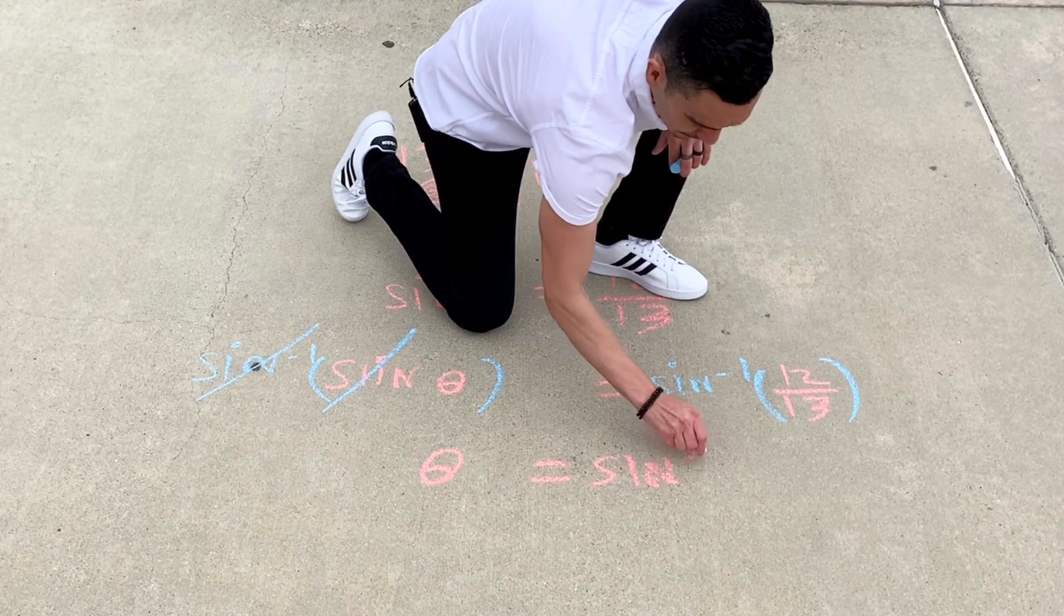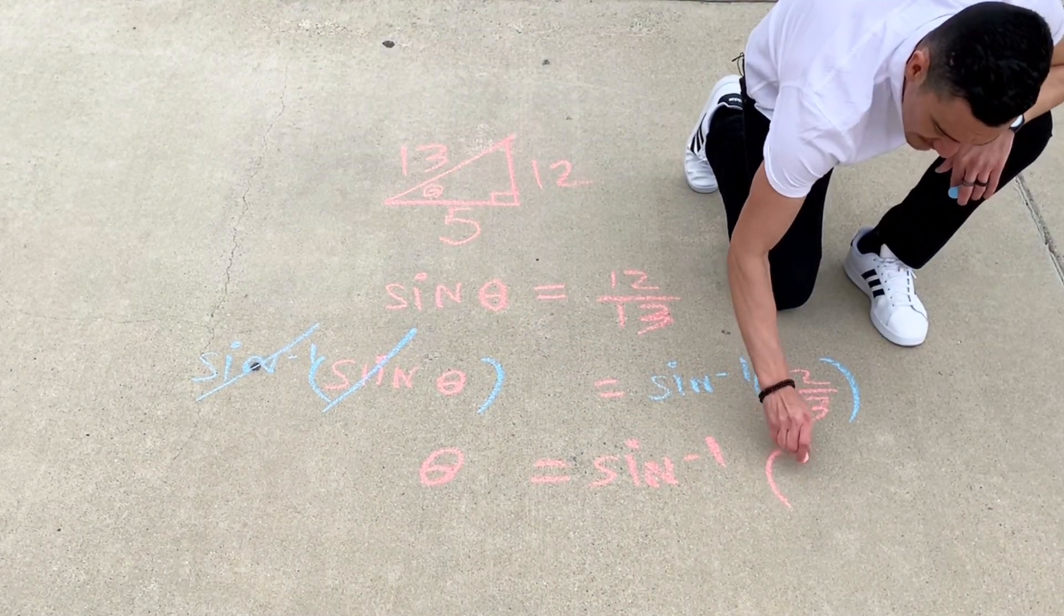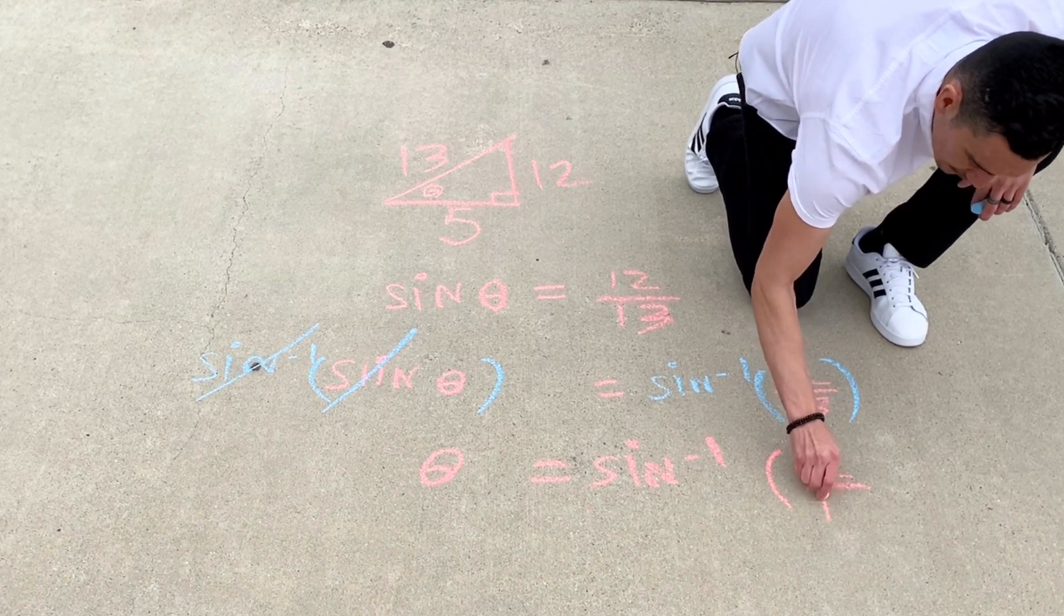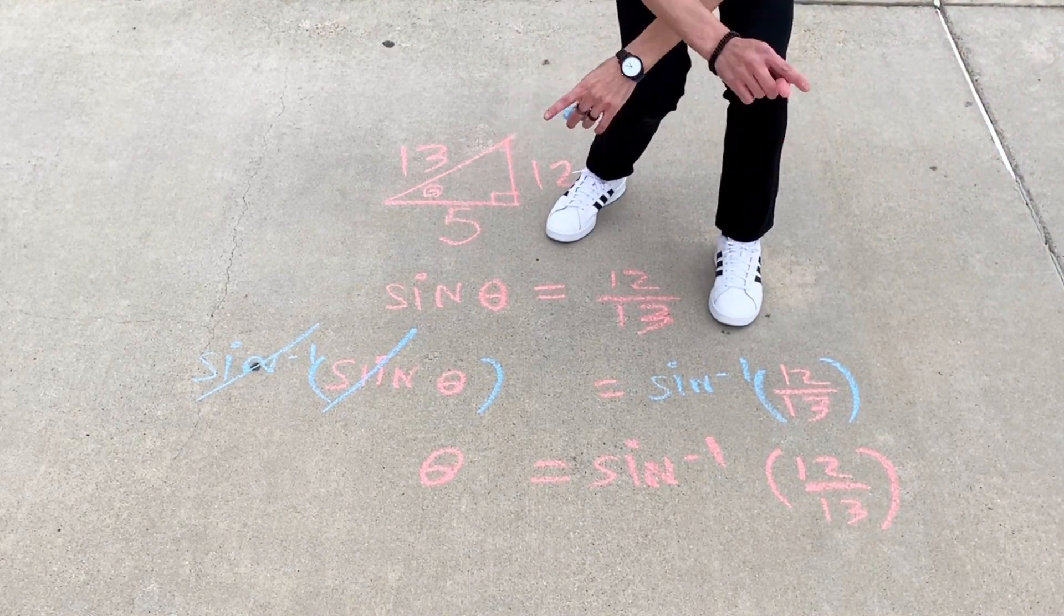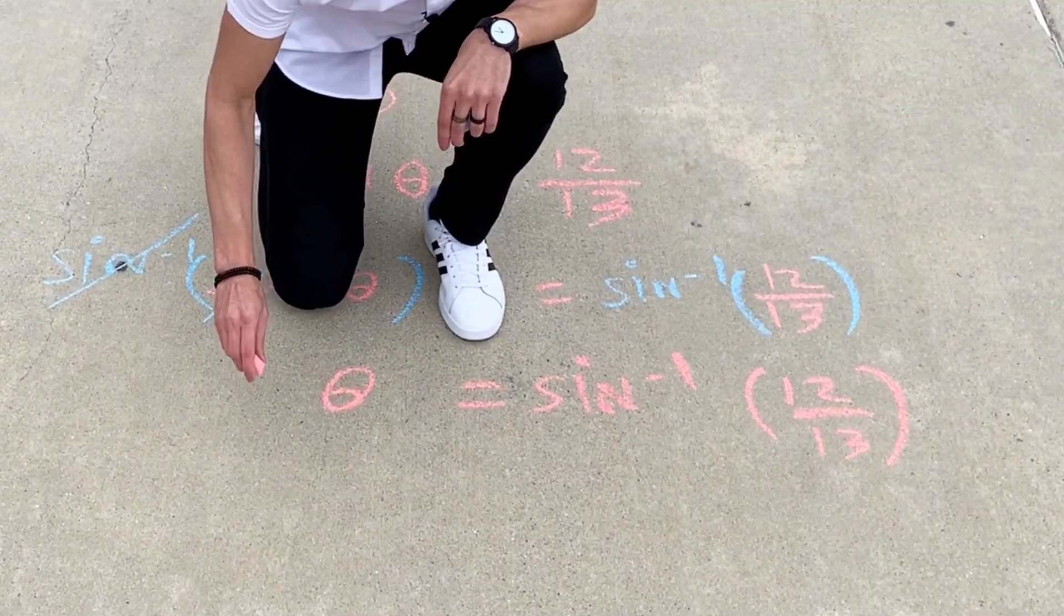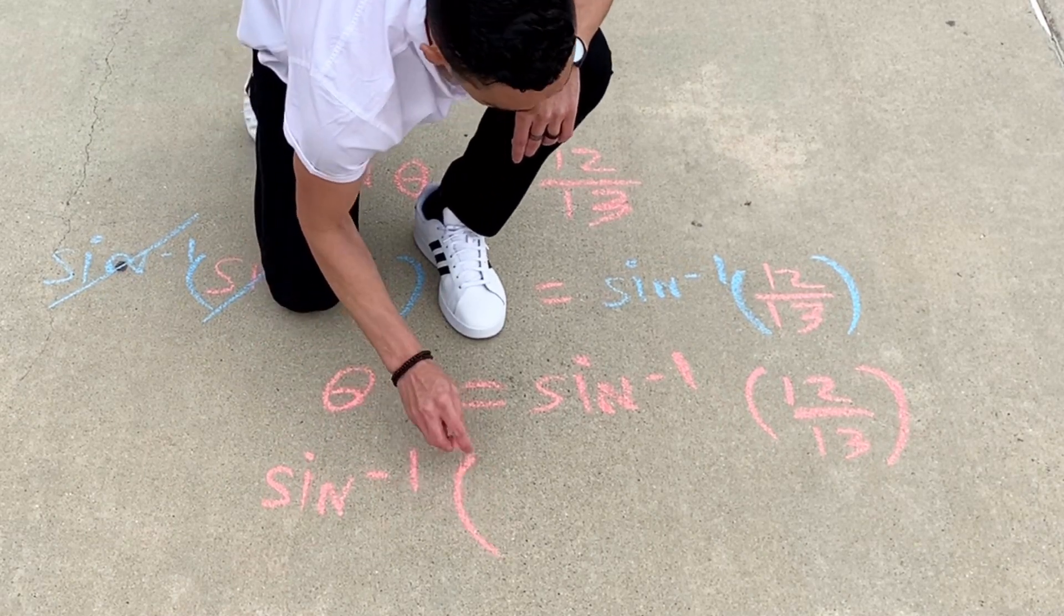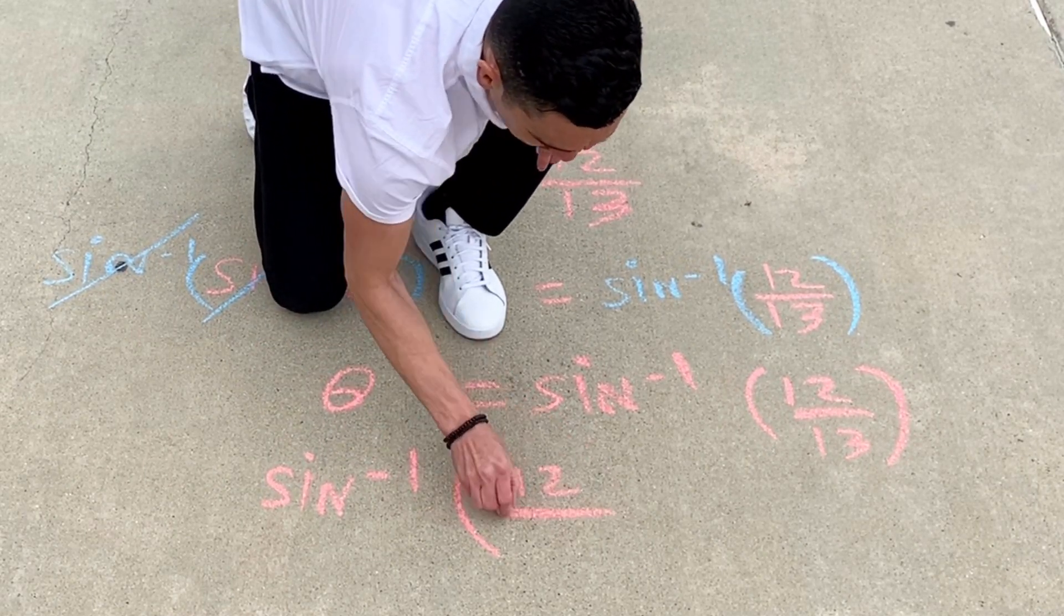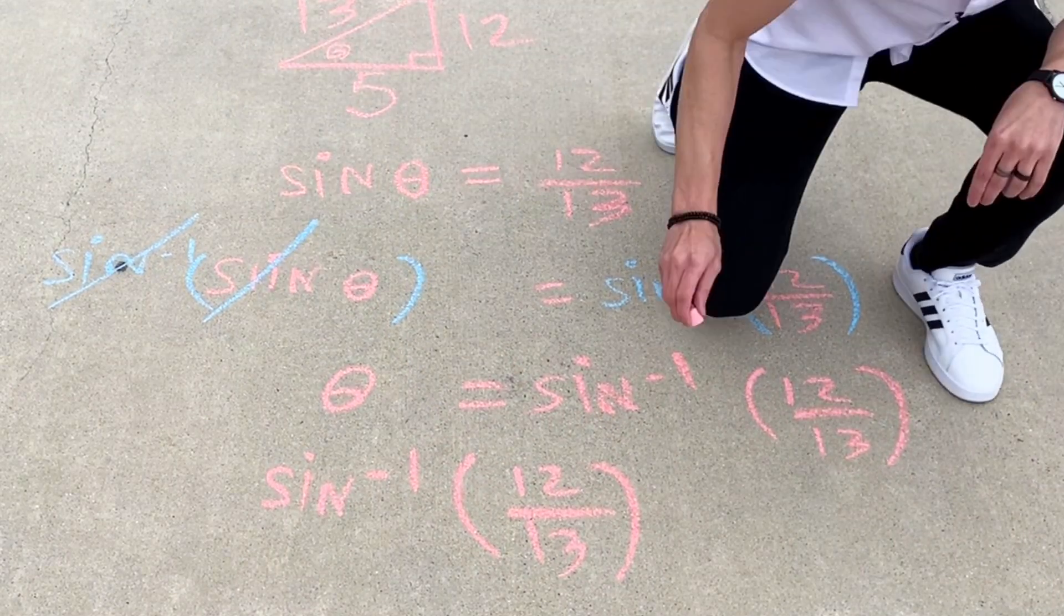And if it's okay with you, I'll take left and right, and I'll switch the order. So that sine inverse of 12 thirteenths equals theta.